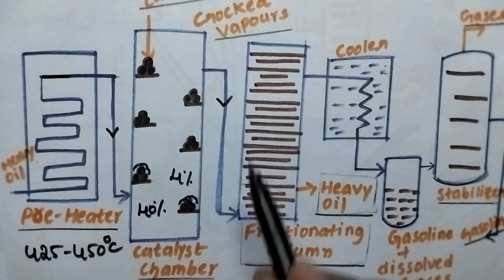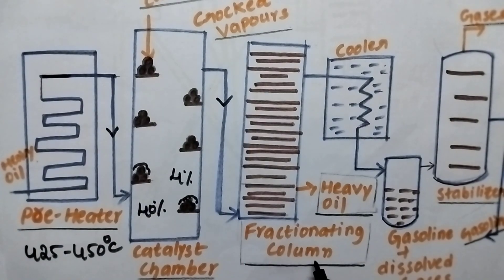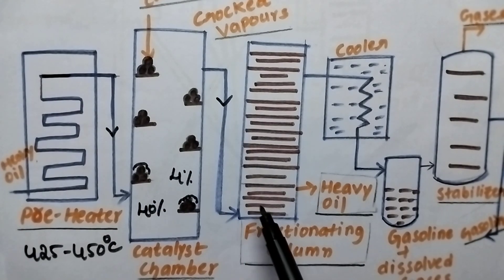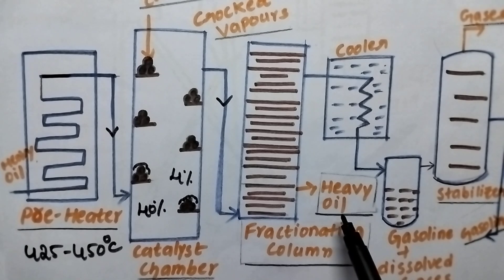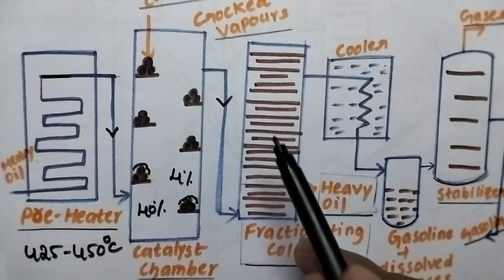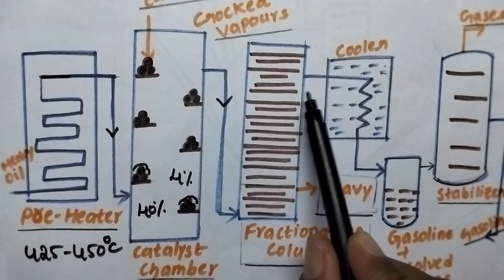Now the cracked vapours are passed through the fractionating column. Here we will get the different fractions. The lower fraction is the heavy oil. From the top we will get the gasoline.